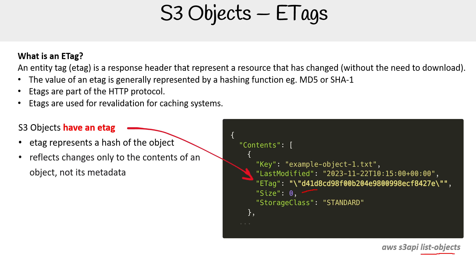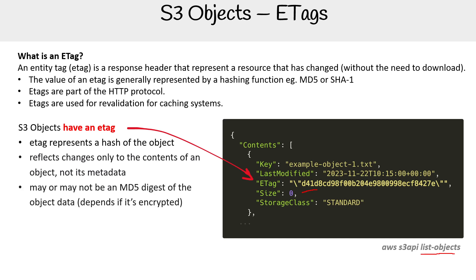ETags reflect changes only to the contents of an object, not its metadata — we'll talk about metadata in another slide. It may or may not be an MD5 digest of the data object; it depends on whether it's encrypted or not, but for the most part it's using MD5. ETags represent a specific version of an object, and as we will learn, S3 allows you to have object versioning.